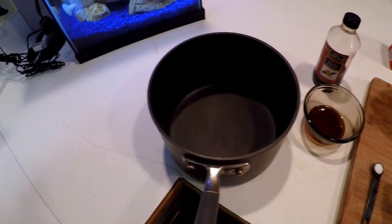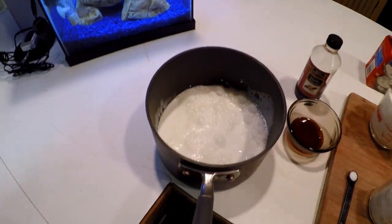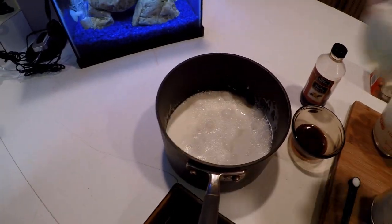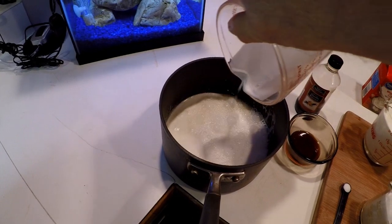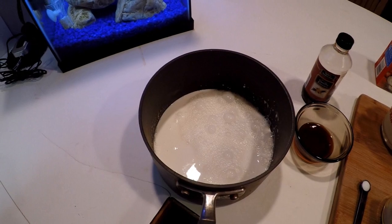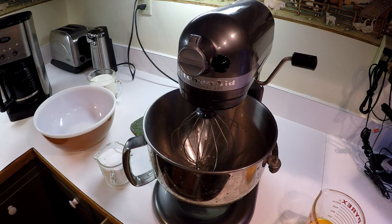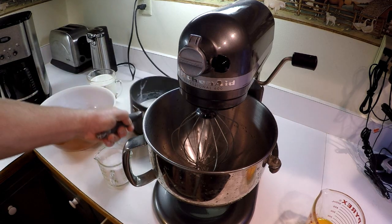So in a saucepan, we're going to take and put our half and half, and we're going to bring this up to not quite a boil. Heat it up real slow, but don't let it boil. Okay, our milk is heated up. We're going to set that aside.